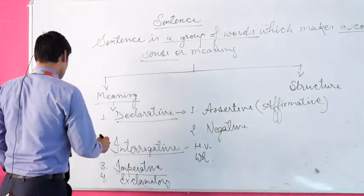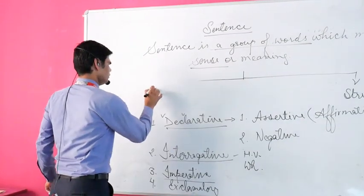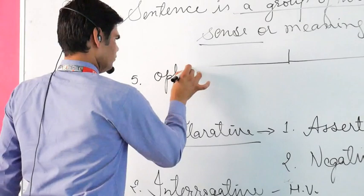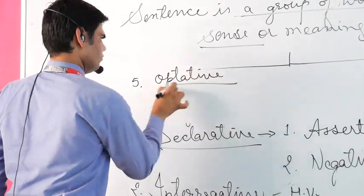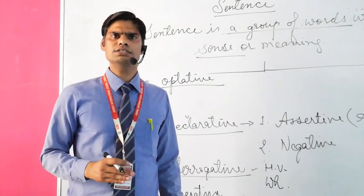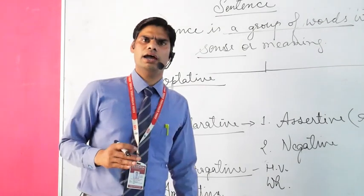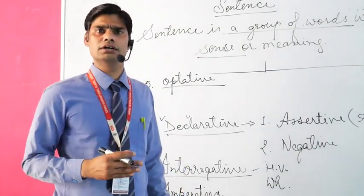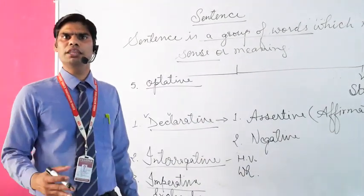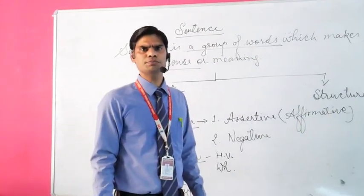The fifth meaning-based sentence type is optative. Optative sentences are generally called sentences based on blessings, wishes, and curses. So generally these are the meaning-based sentence types. Now we will talk about sentences based on structure.